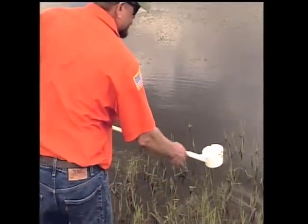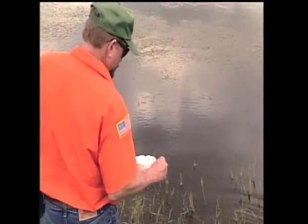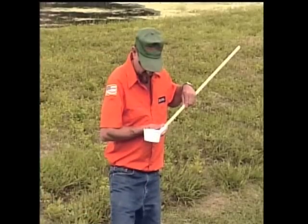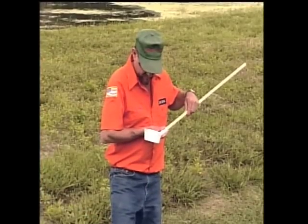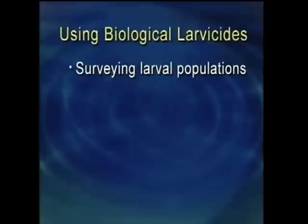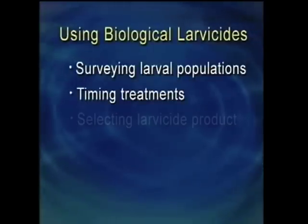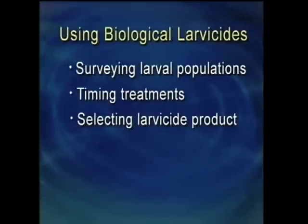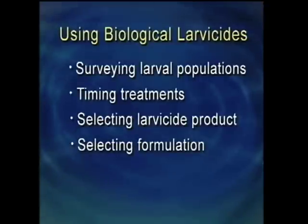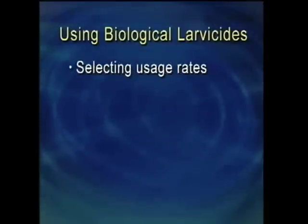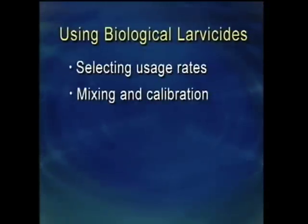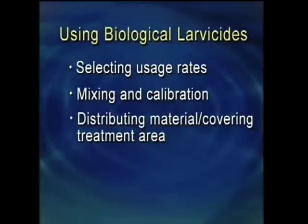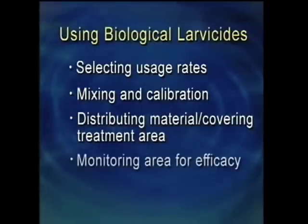The success of any biological larviciding program requires that the following steps are handled properly for each application: surveying the larval populations, timing the treatments, selecting the larvicide product, selecting the formulation, selecting the usage rates, mixing and calibration, distributing the material and covering the treatment area, and monitoring the area for efficacy.